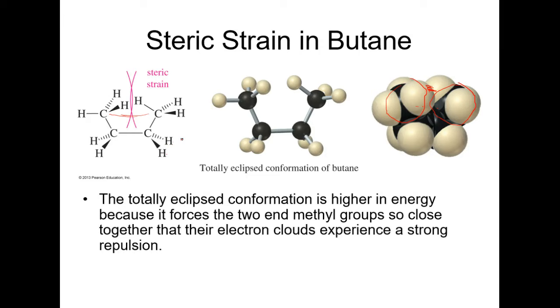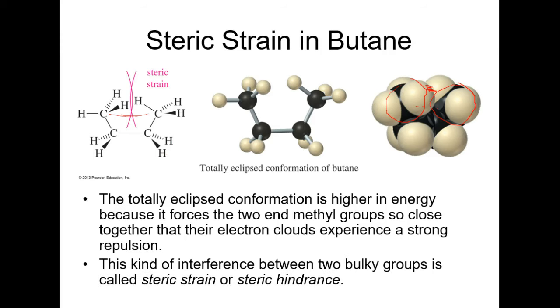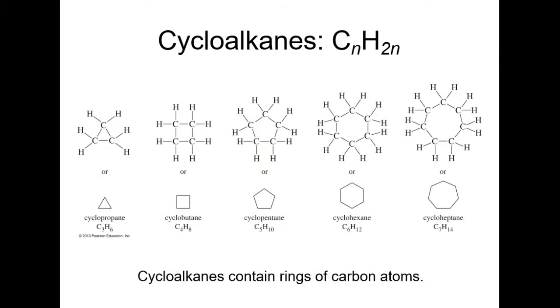That's what's referred to steric strain when you have the total eclipse conformation. It's higher in energy because it forces the two methyl groups so close to each other that the electron clouds experience a strong repulsion. This kind of strain between two bulky groups is called steric strain or steric hindrance.